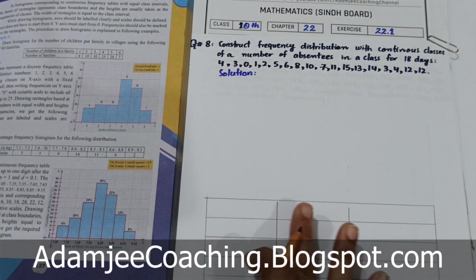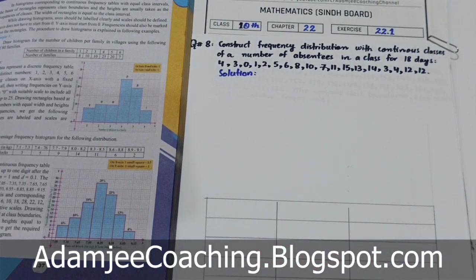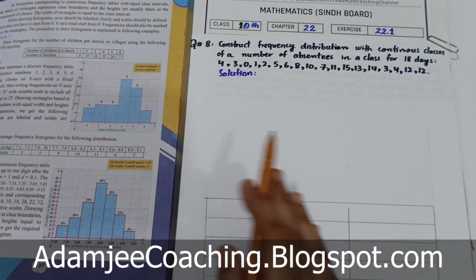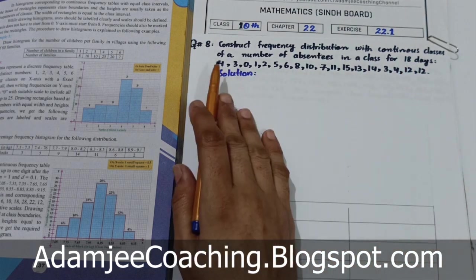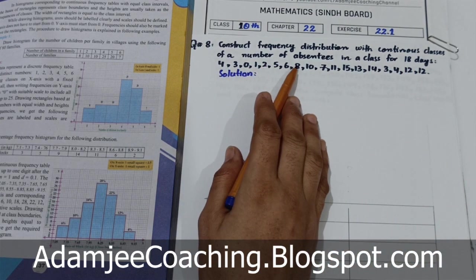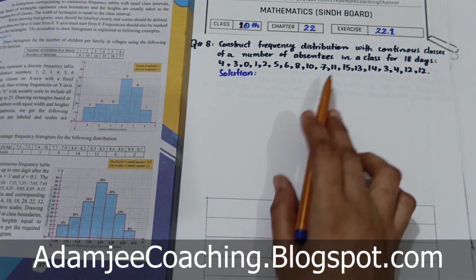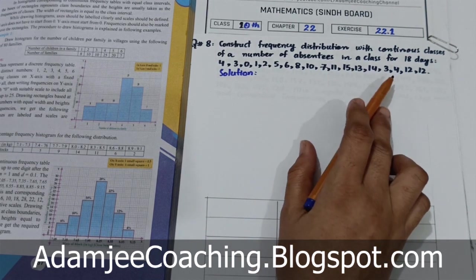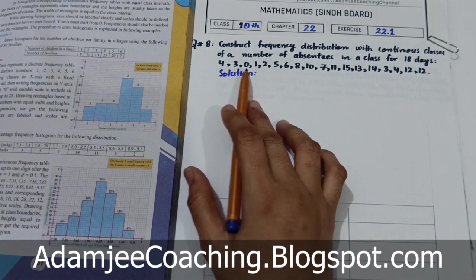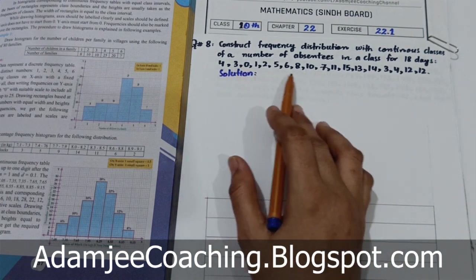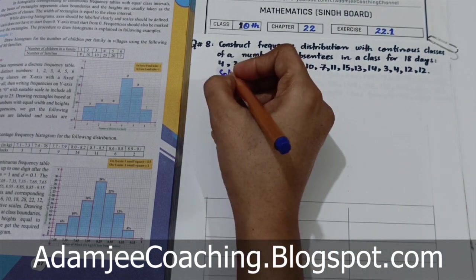Range find out karne ke liye pehle data dekhna hota hai - aapke data ki minimum value kya hai aur maximum value kya hai. 18 days ke data mein check karte hain. Range find out karne ka formula hai: maximum minus minimum. Yahan se hum likhenge.